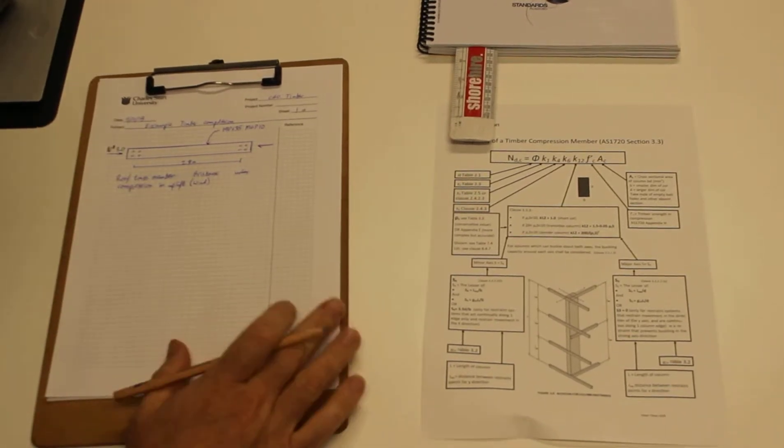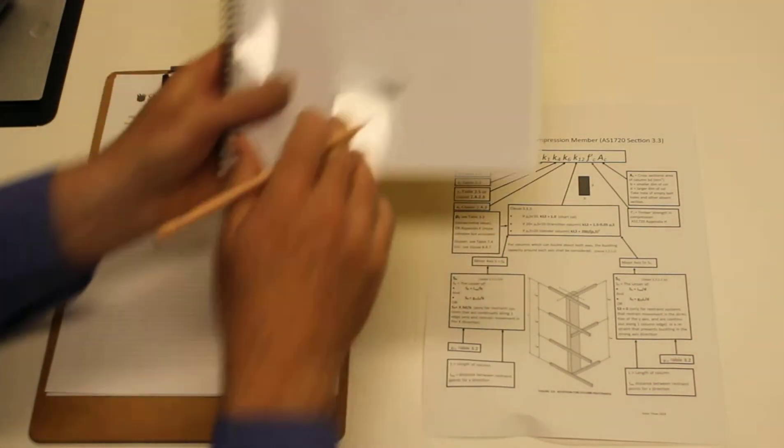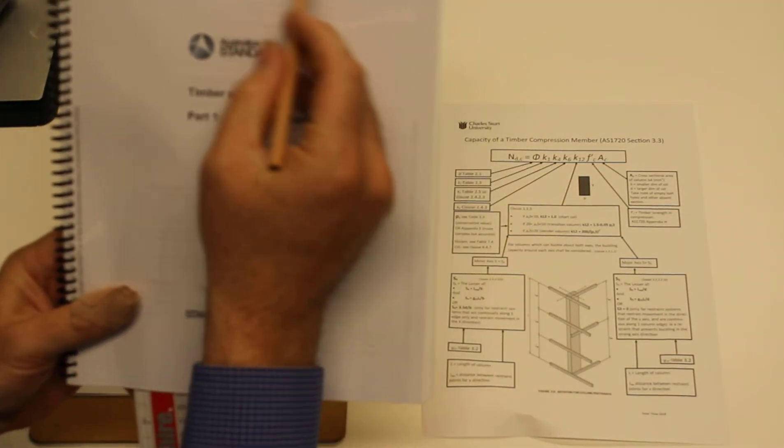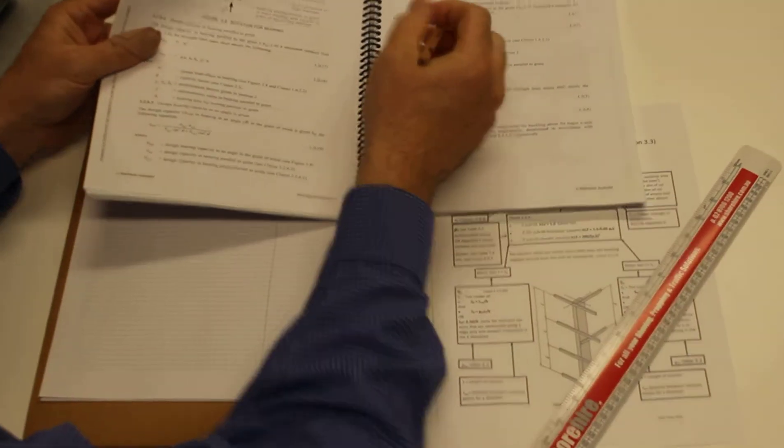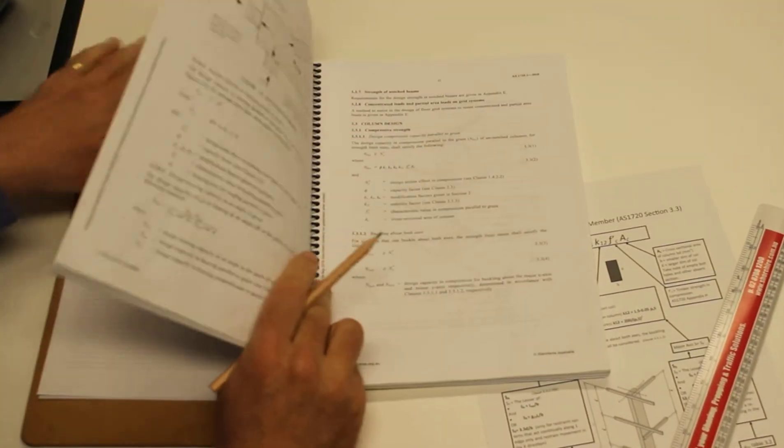Okay, this is an example problem for a timber member in compression. Whenever you do that, you need Australian Standard AS1720 nearby. So we've got that here and we'll turn to section 3.3 column design, and here are the formulas we need to use.